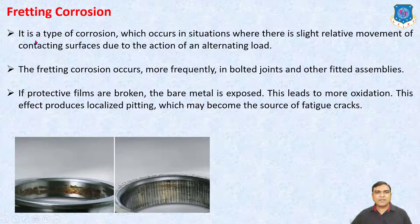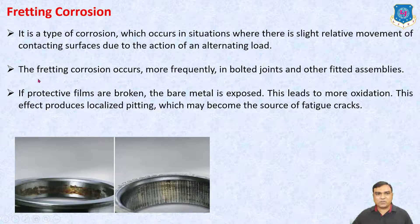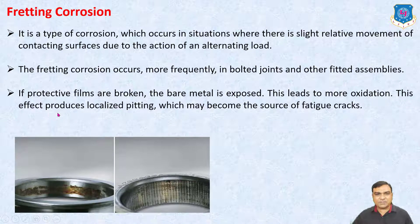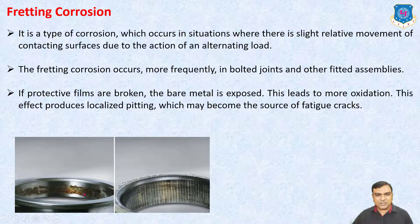Fretting Corrosion is a type of corrosion which occurs in situations where there is slight relative movement of contacting surfaces due to the action of alternating loads. Fretting corrosion occurs more frequently in bolted joints and other fitted assemblies. If protective films are broken, the bare metal is exposed, leading to more oxidation. This effect produces localized pitting which may become the source of fatigue cracks. In bearings continuously rotating on a shaft, this surface is eroded — which is known as fretting corrosion.